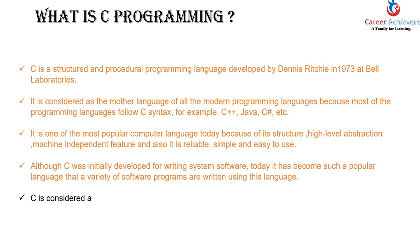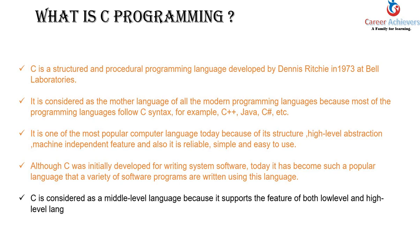C is a middle-level language because it supports the features of both low-level and high-level languages. C mein dono low level aur high level available hai. Isi karan yeh user friendly bhi hota hai, machine independent bhi hota hai, aur low level hone ke karan yeh aasani se memory allocate kar paata hai, jisse program bahut fast run hoti hai. Thank you for watching.